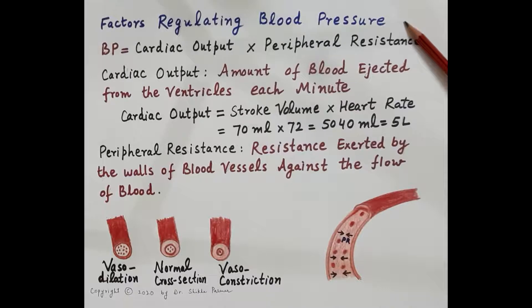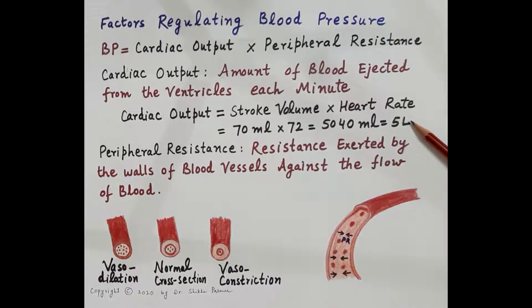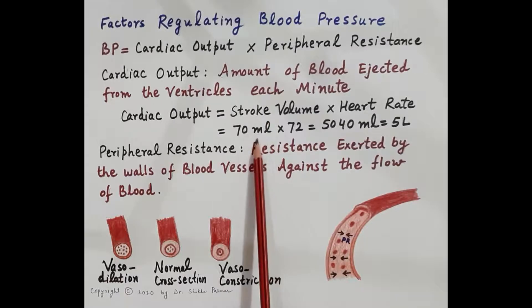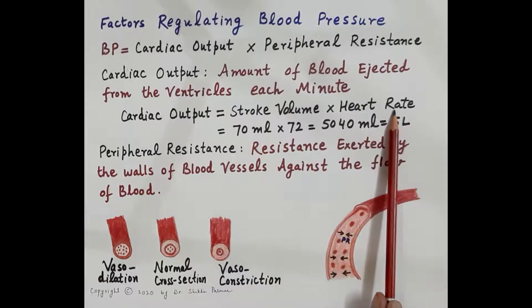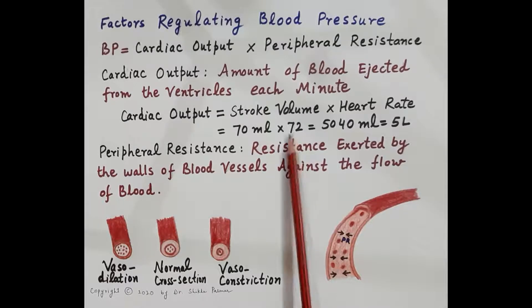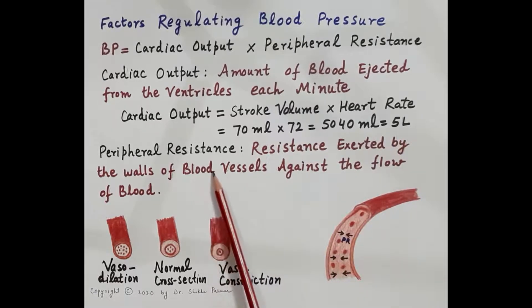When we talk about factors regulating blood pressure, there are two main factors: blood pressure equals cardiac output multiplied by peripheral resistance. Cardiac output is the amount of blood ejected from the ventricles each minute, and it equals stroke volume multiplied by heart rate. Stroke volume is the volume of blood ejected during one contraction of the ventricle, about 70 ml. Heart rate is about 72 beats per minute, so cardiac output is approximately 5 liters per minute.